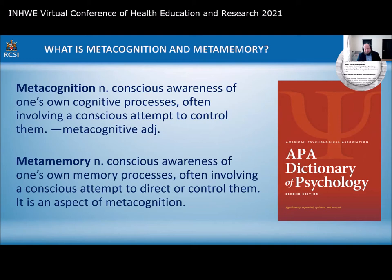Metacognition is the conscious awareness of one's cognitive processes — where you've made or are about to make a decision and you're thinking: is this a robust decision, what is it based on? Meta-memory is a part of metacognition concerned with how robust your memory traces are. Am I willing to say I remember 100% that this is the case? The process of trying to quantify your memory is called meta-memory.